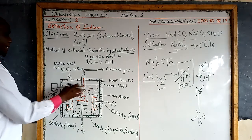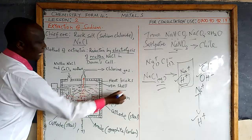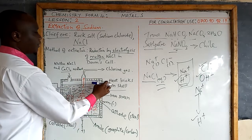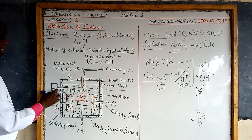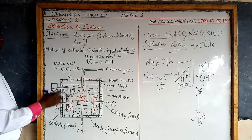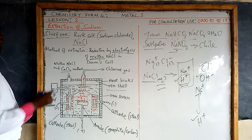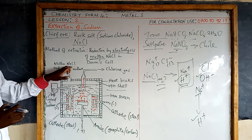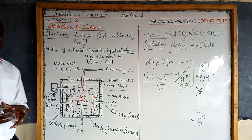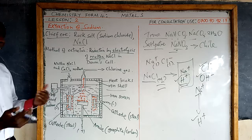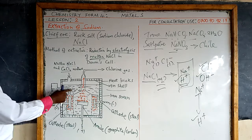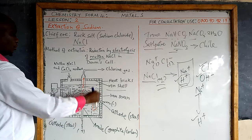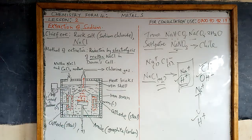The molten mixture is poured into the Down cell. The Down cell is made up of an iron shell, and the iron shell is surrounded by heat bricks. The function of the heat bricks is to ensure that high temperatures are maintained within the cell, so that the molten mixture does not crystallize out. Because if it crystallizes into solid form, you cannot electrolyze it — the ions will not be mobile, current will not flow, and electrolysis will not take place.